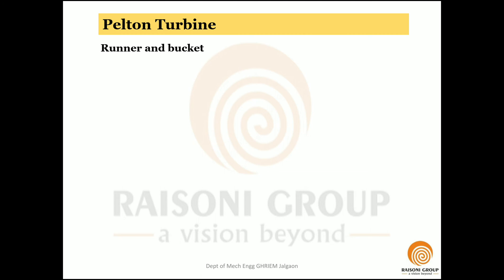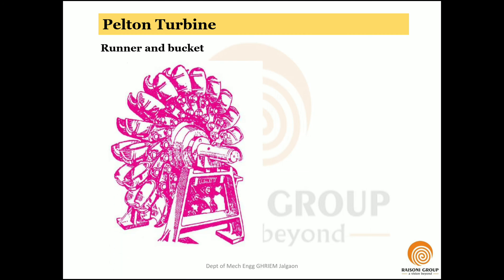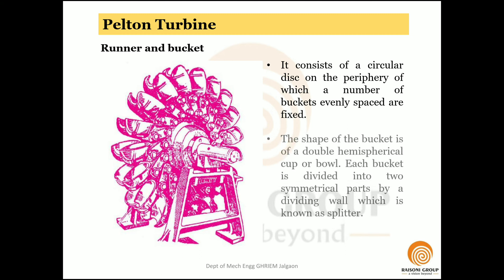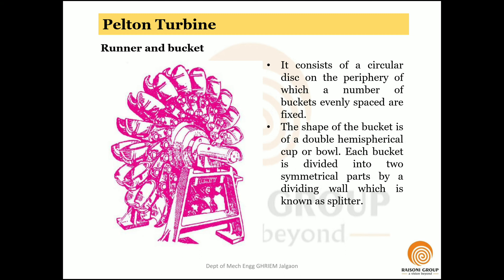The next part is the runner and the bucket. In the diagram we can see the runner, and the buckets are mounted on the outer periphery on a circular disc. A number of buckets are evenly spaced and fixed on the periphery of the disc. The shape of the bucket is of the double hemispherical cup type.